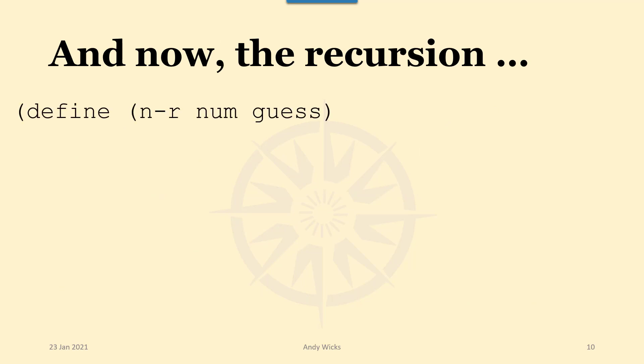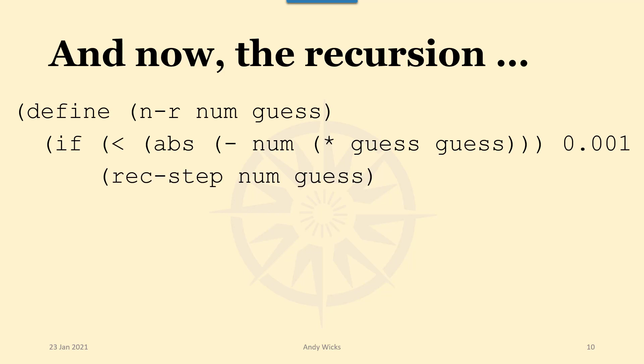Now the recursion. First of all we're going to define a function called n-r, Newton-Raphson. And that's going to take in a number and a guess. Now what we want is to be able to get out. And we'll get out when we find that the absolute of the number minus the square of the guess is less than 0.01. What we're saying is that when we get to a number that's so close to the square root that we're only 0.001 out then we're close enough. Now obviously we could add in as many zeros as we like. But as you can see I've run out of space. Now we do the rec-step with num and guess.